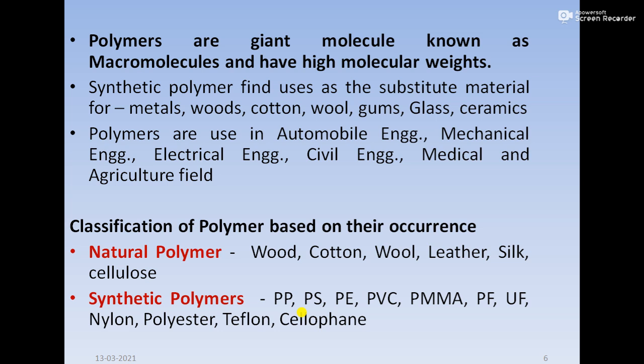Where are polymers used, or where are polymers substituted? The first example is metals, woods, cotton, wool, gums, glass, and ceramics. Initially chairs and tables were prepared from metals and woods — right now they are prepared from plastic, that is polymer. Cotton and wool for clothes have been replaced by polyester, terrycot, and terrywool. Gums have been replaced by resins, and glass and ceramics — you can take the example of cups: initially prepared from glass and ceramic, right now prepared from plastic.